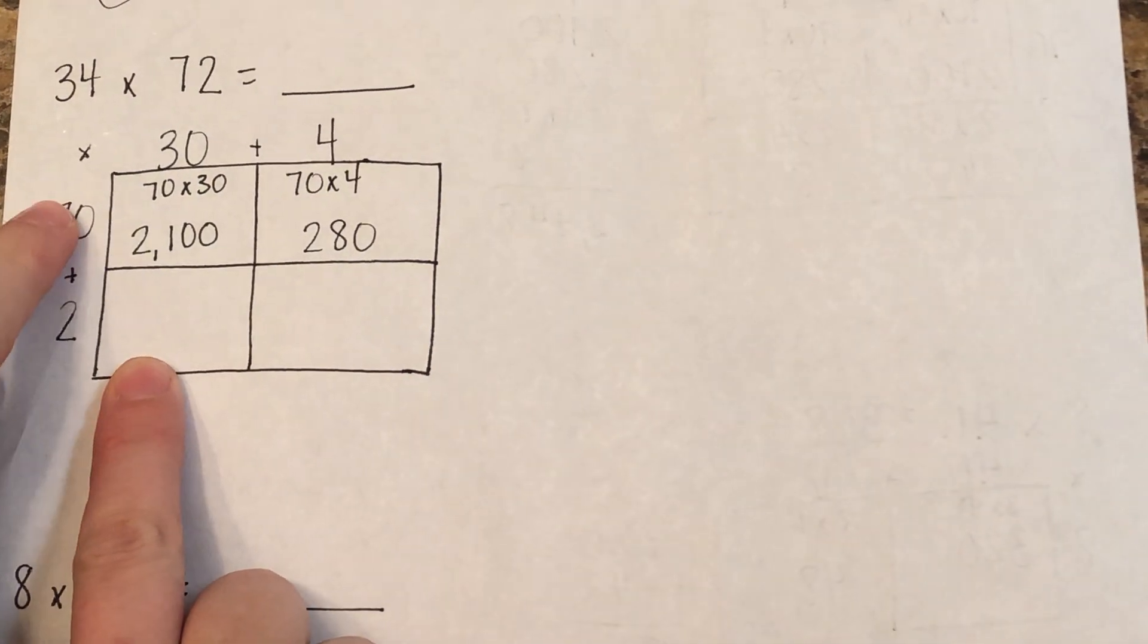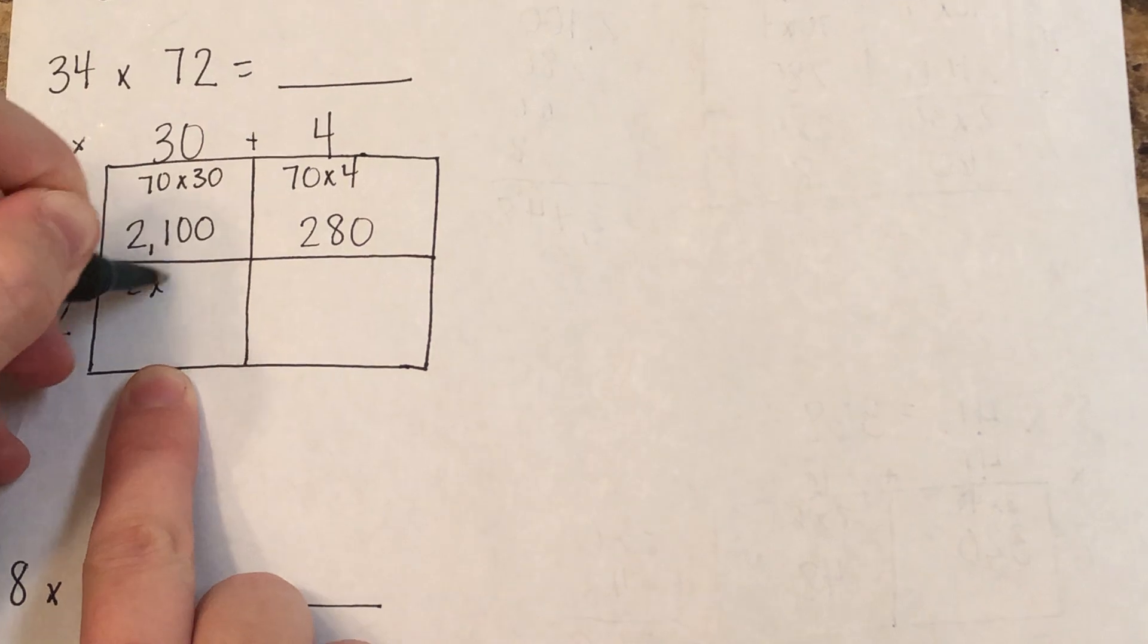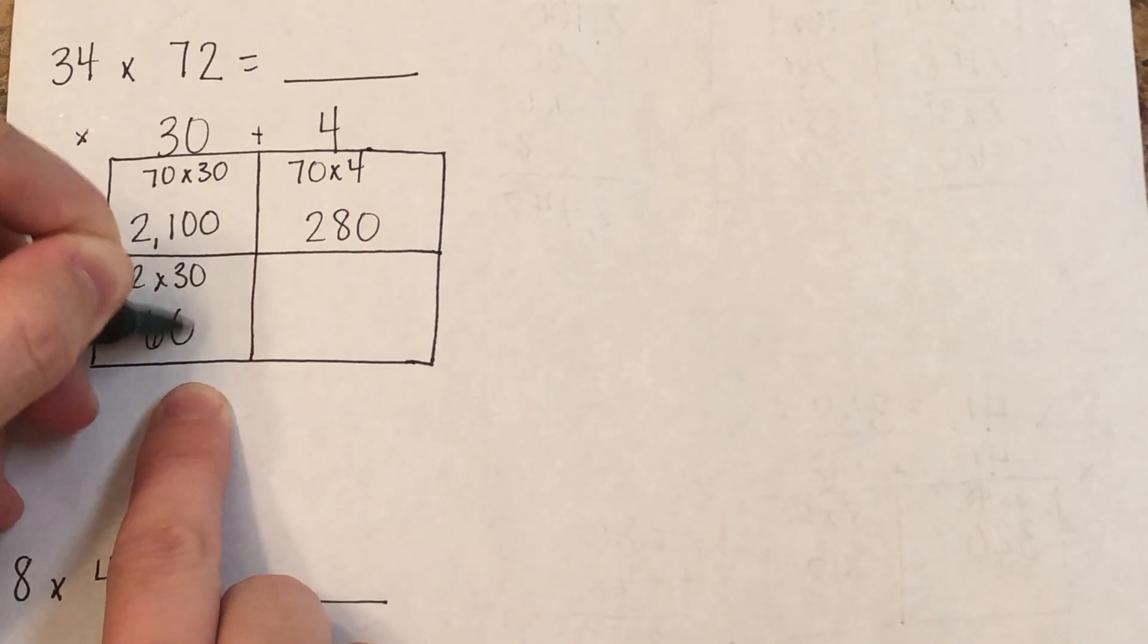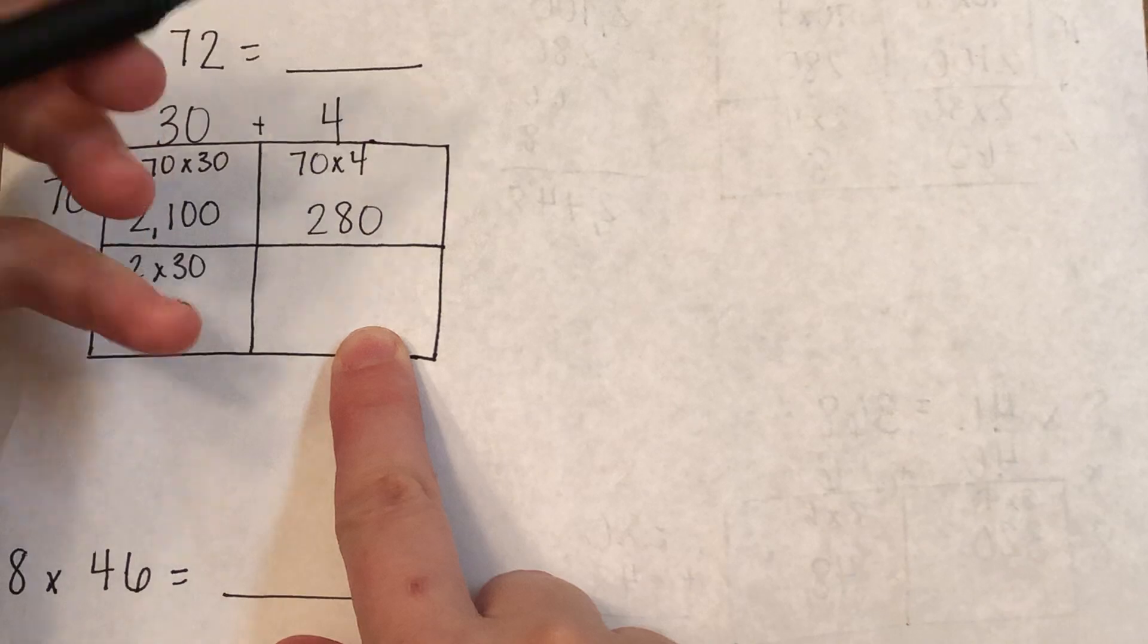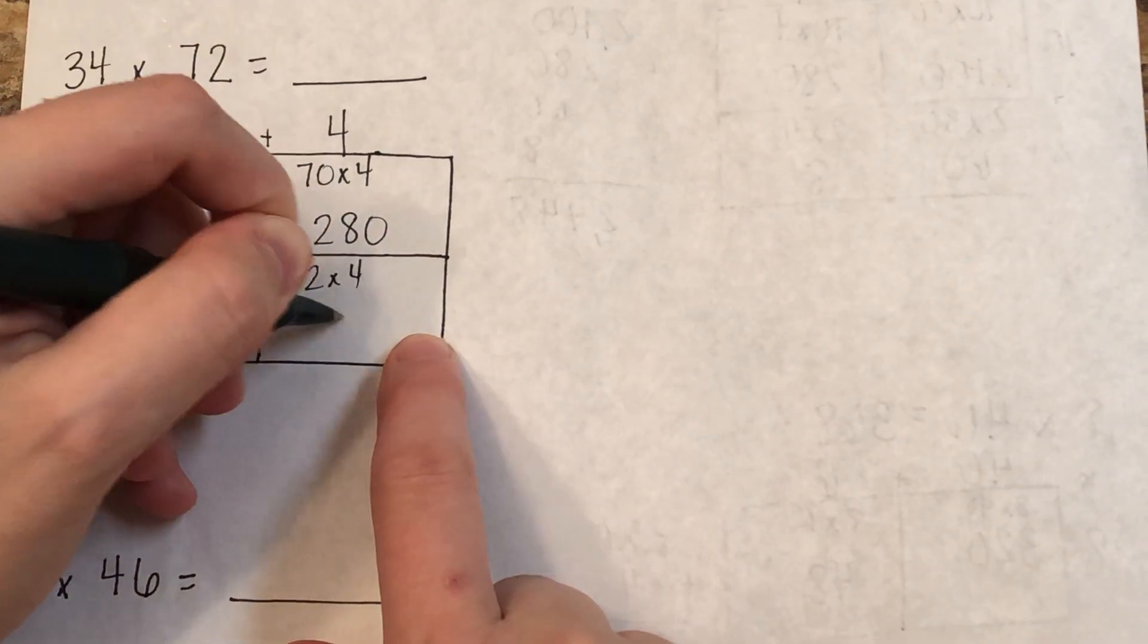Down here, I have to do 2 times 30, which is 60. And then the bottom right, 2 times 4, which is 8.